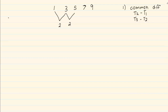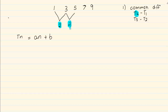Now many a times pupils make a mistake — they minus term 1 minus term 2, giving minus 2. So you must be careful with your signs. Once you get the common difference, the formula that you use is TN is equal to AN plus B. Now A is what you had calculated in that step, so for now we have TN is equal to 2N.